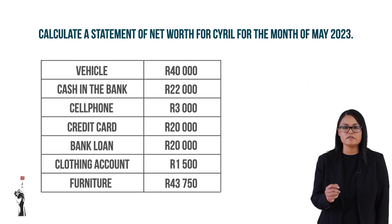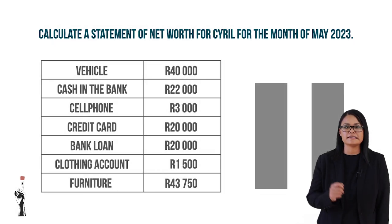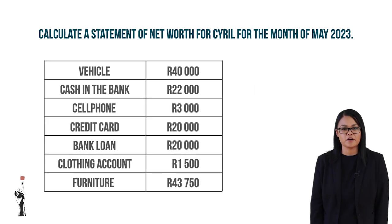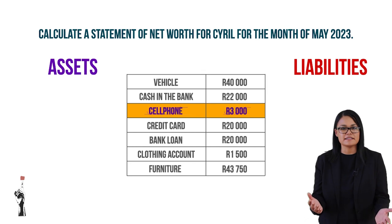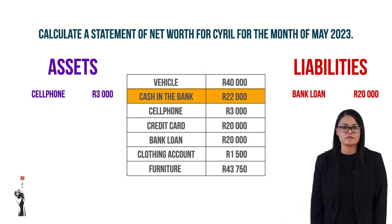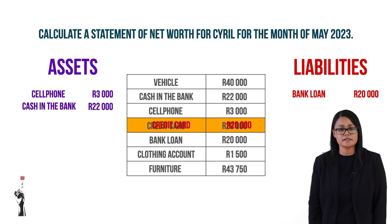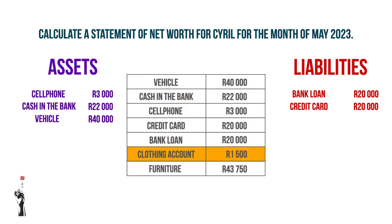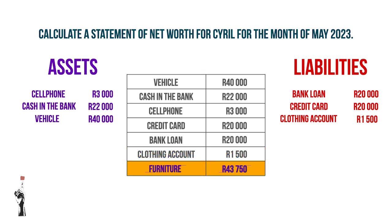I'm going to give you the name of the account and you are going to say whether it is an asset or a liability. The mobile phone — it's an asset. A loan from the bank — it's a liability. Money in a savings account — it's an asset. Cyril's credit card — that's a liability. Cyril's car — that's an asset. A clothing account at Mr Price — that's a liability. And the last one, furniture that Cyril owns — that's an asset.